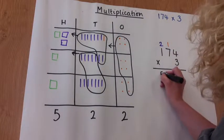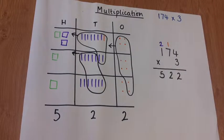3 times 1 is 3, plus 2 makes 5. So once again, we have the answer 522.